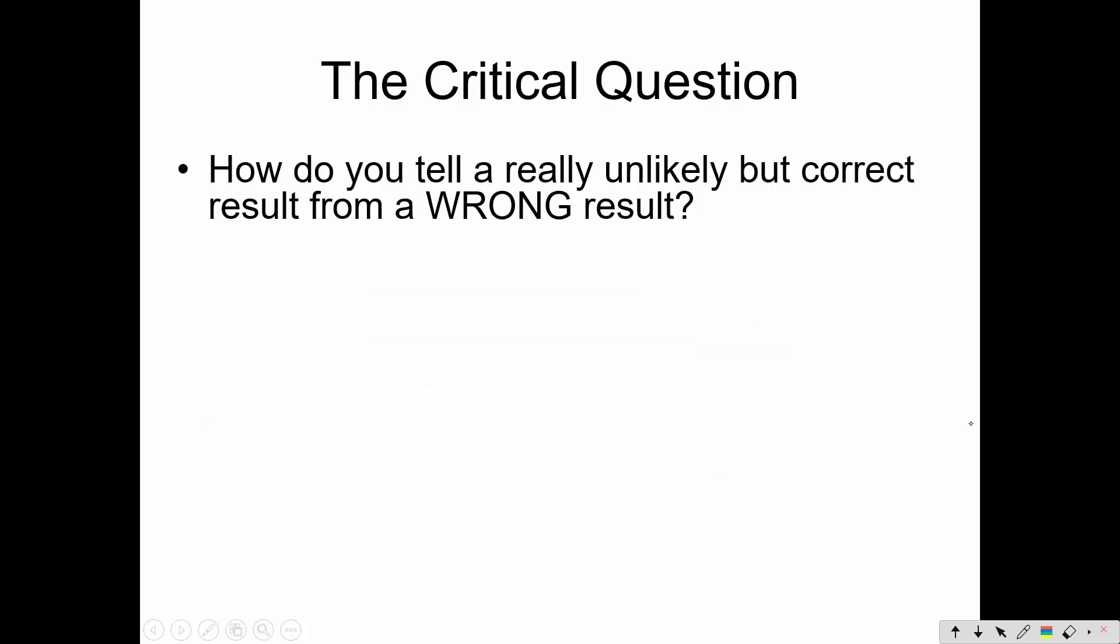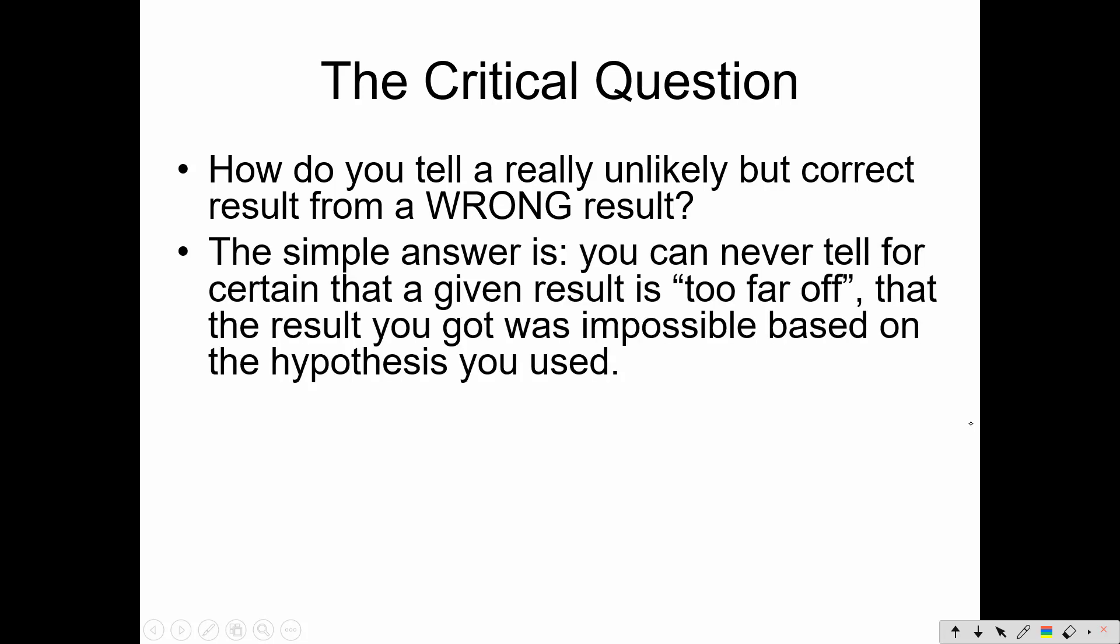How do you tell a really unlikely but correct result from a wrong result? Let's say I misunderstood. I came up with a wrong hypothesis for how red-eyed or white-eyed color is inherited in fruit flies. The simple answer is that you can never really tell for certain that a given result is too far off. The result you got was impossible based on the hypothesis you used. I mean, it could happen. It may just be very unlikely.